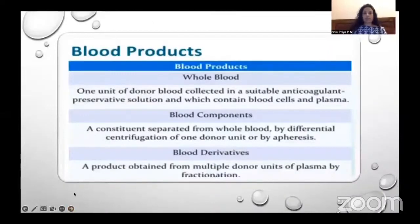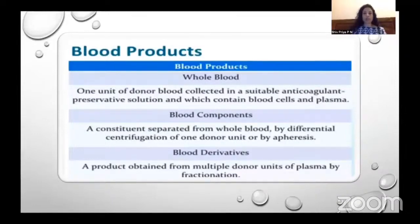One unit of donor blood collected in a suitable anticoagulant preservative solution containing blood cells and plasma is whole blood. A component separated from whole blood by differential centrifugation of one donor unit or by apheresis is a blood component. Various components are available. A blood derivative is a product obtained from multiple donor units of plasma by fractionation.